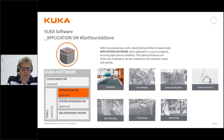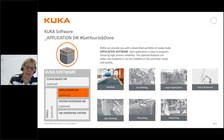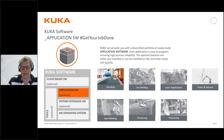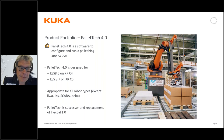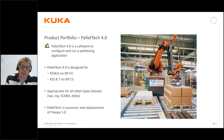Within this software structure there is a group called application softwares, which are softwares that shorten your application time. By purchasing these softwares you can reduce your time to market and your risk in projects. This is where Palletek belongs. Palletek 4 is released on the current versions of KSS — 8.6 and 8.7 — depending on whether you have a generation 4 or generation 5 controller.